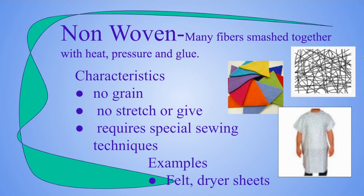Our third fabrication type is called non-woven. This is where we skip the yarn step and just take fibers and bring them together, smashing them with heat and glue. Characteristics: there is no grain, it doesn't stretch or give — if you pull on it, it will tear apart. It requires special sewing techniques because it is very weak. Examples would be felt or dryer sheets — go grab a dryer sheet and pull on it to see what happens. A lot of medical gowns and face masks are made using the non-woven method.